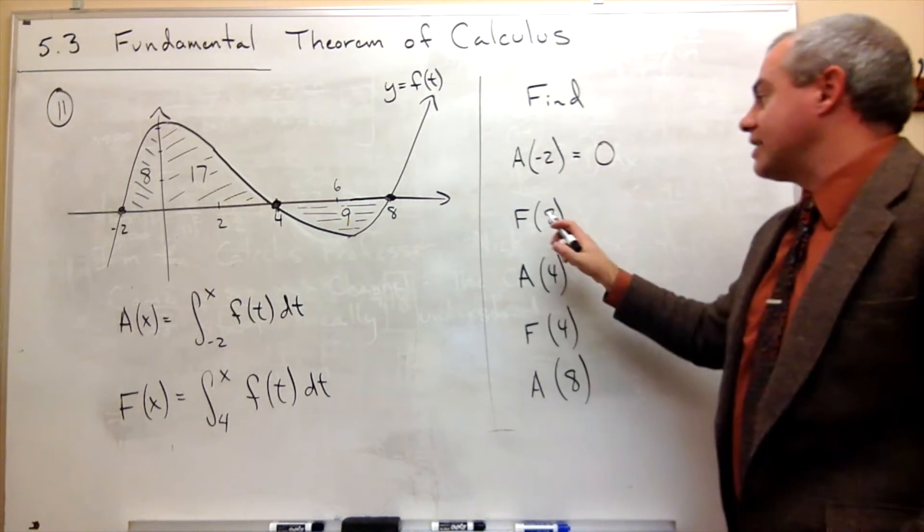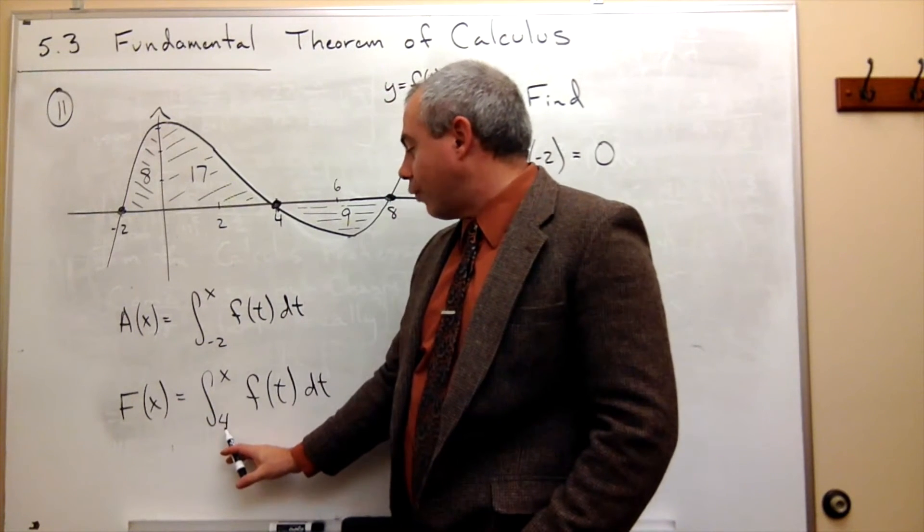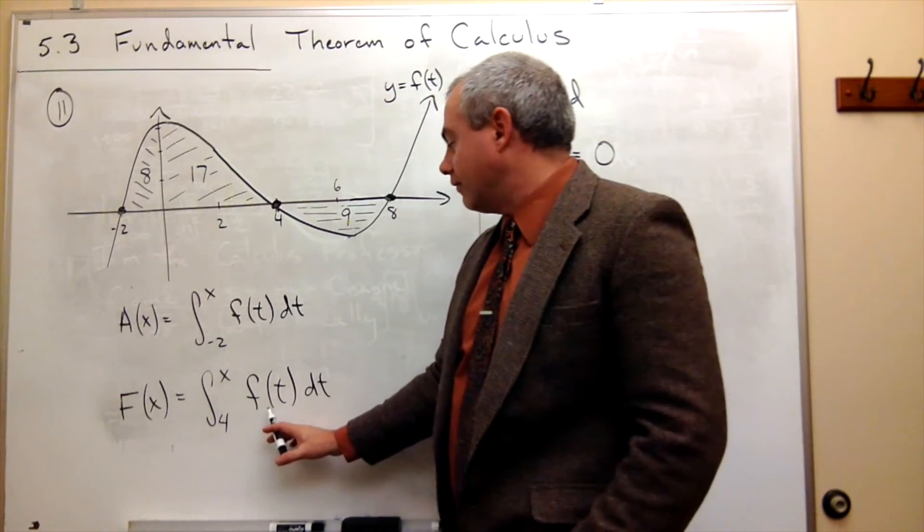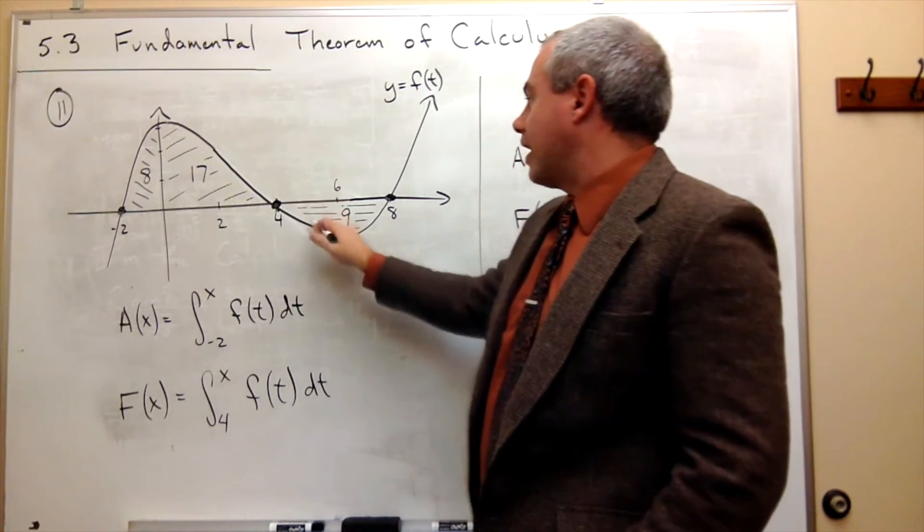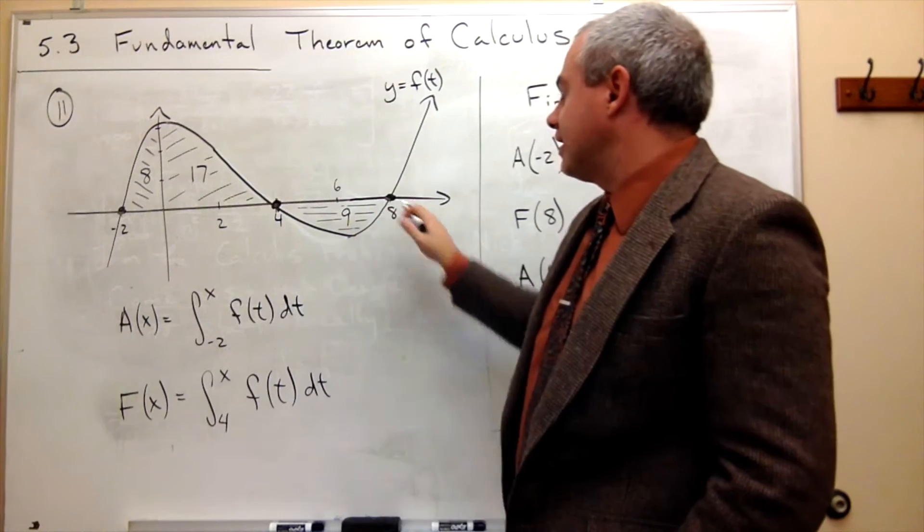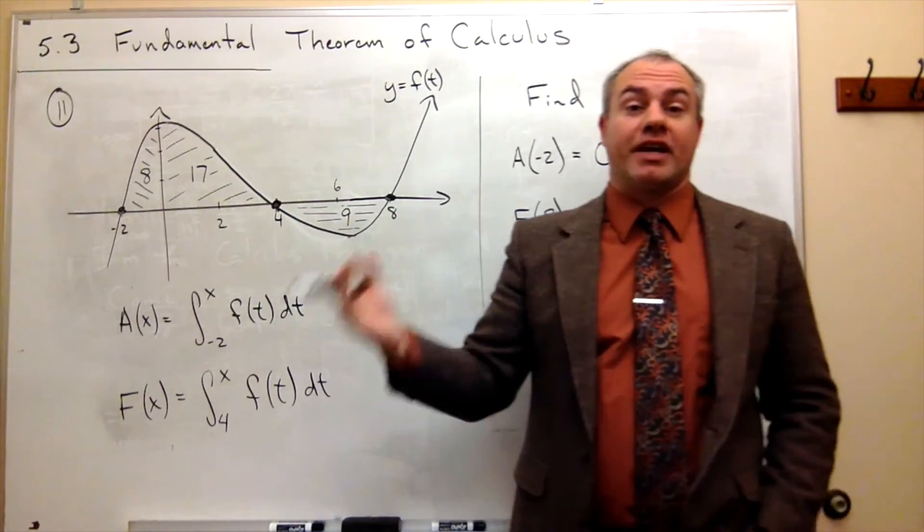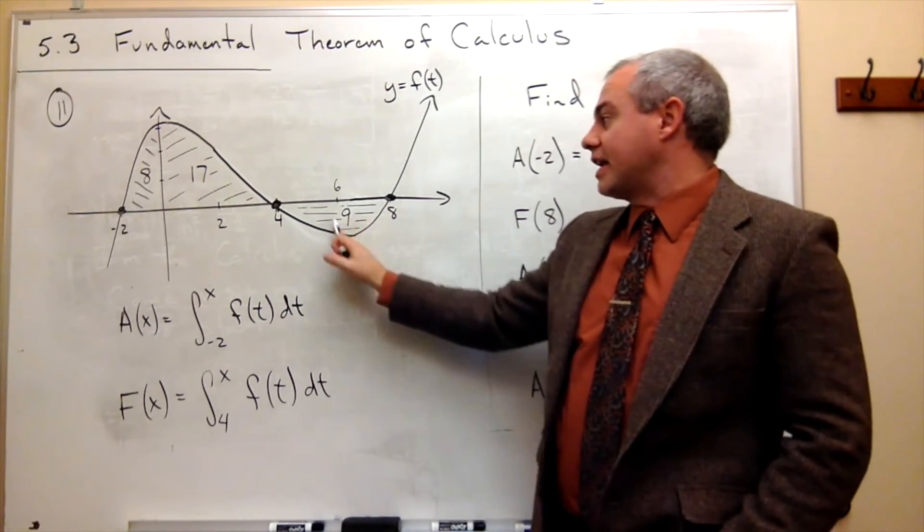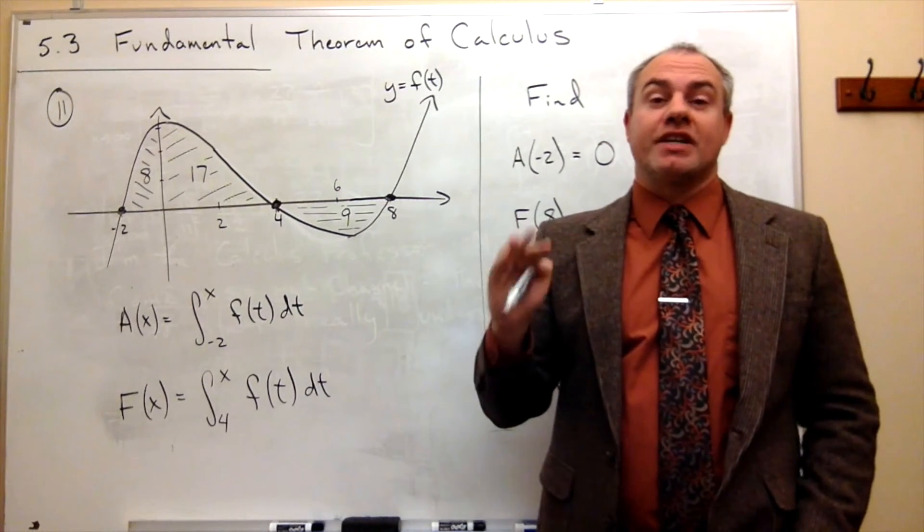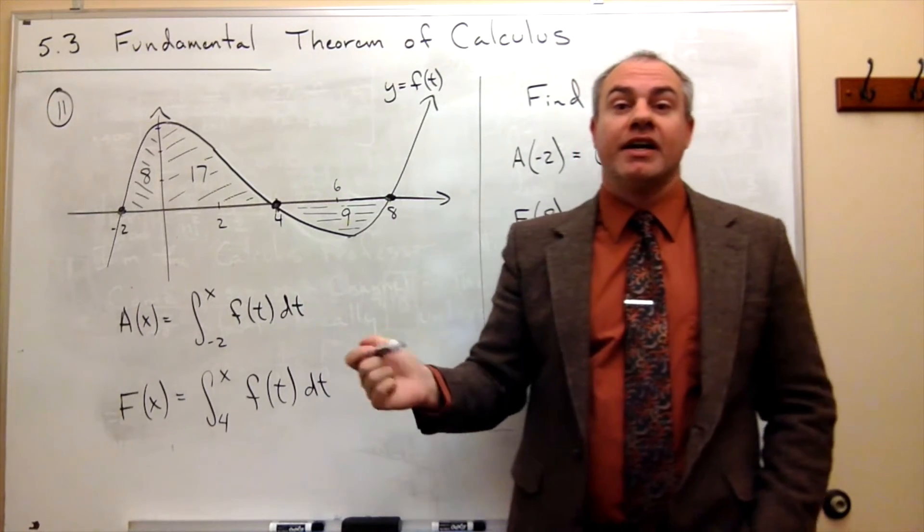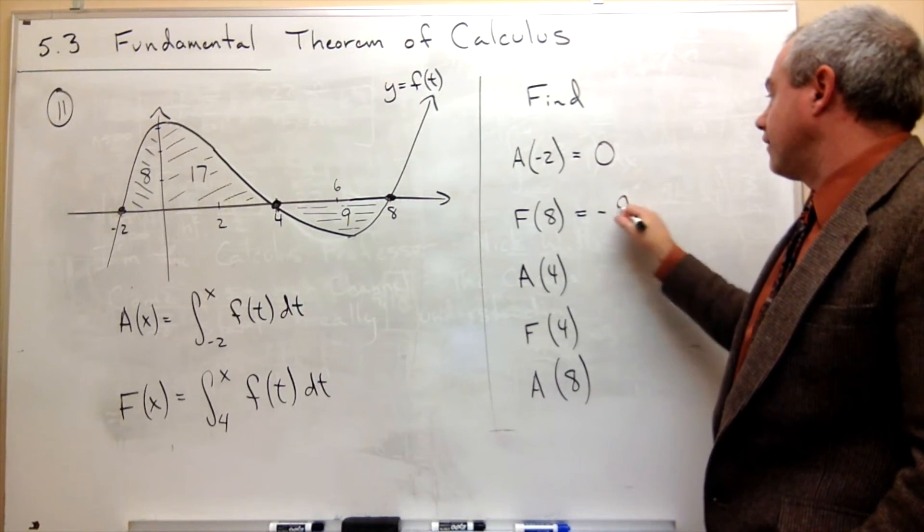Now, what is F of 8? Well, F says integrate from 4 to 8 of little f of t dt. Well, 4 is here, and I start picking up area until I get to 8. But remember, there's a temptation right now to say the answer is 9, because there's 9 area here. But all that area is under the x-axis, so it doesn't count as positive area. It counts as negative area. So the answer would have to be negative 9.